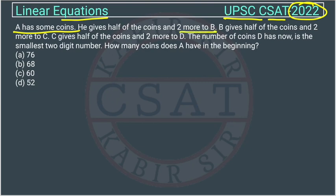Let's make the equation. Suppose A has how many coins? A number of coins. Now B coins - how many number of coins B is having? B is having half of coin of A plus two more. Like he gives half of the coins and two more to B.